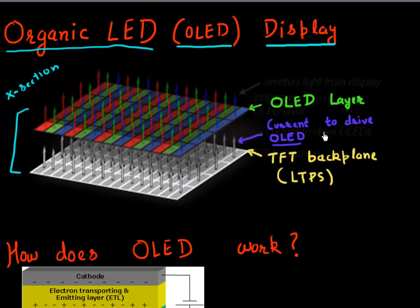OLED stands for Organic Light Emitting Diode, and the keyword here is diode. So since it's a diode, it needs to be driven by a current, and these thin film transistors provide that current. As compared to an LCD display where you just need a voltage to manipulate your display.